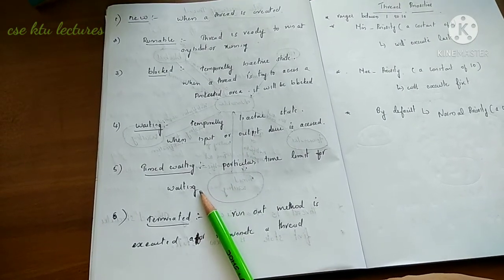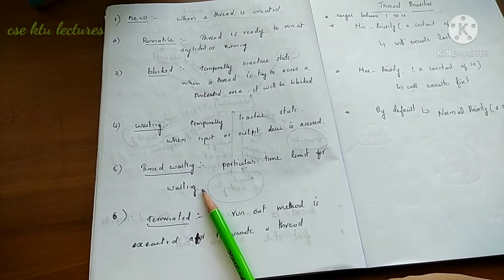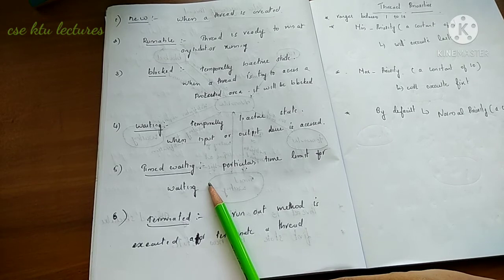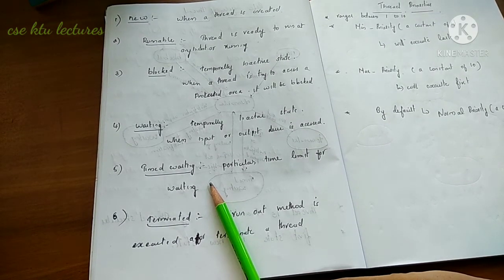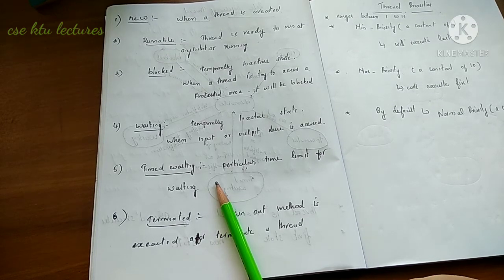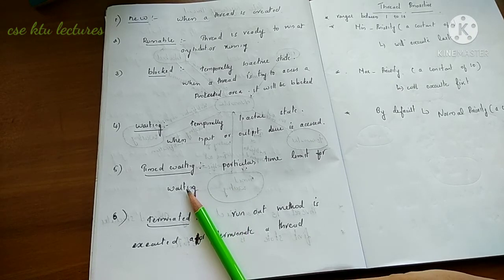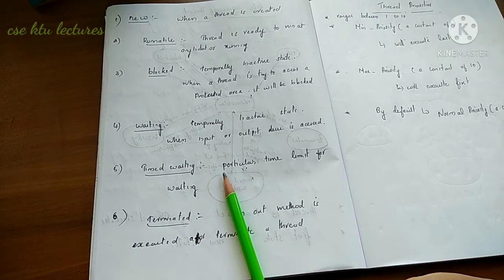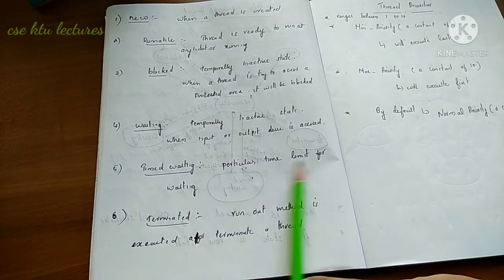The next state is Timed Waiting. In the Waiting state, there is no time limit. In Timed Waiting, however, there is a particular time limit for waiting. If a timeout occurs, the thread will return to the Runnable state. If a thread is in Timed Waiting, it waits for a specified time period.